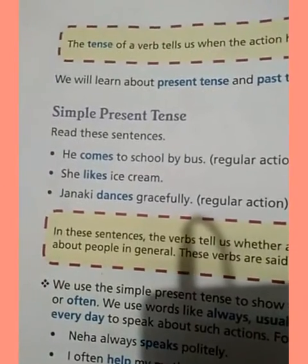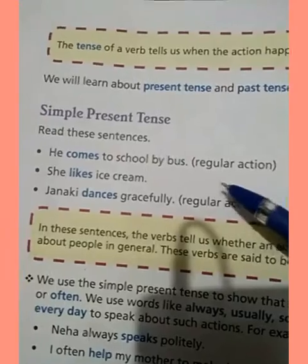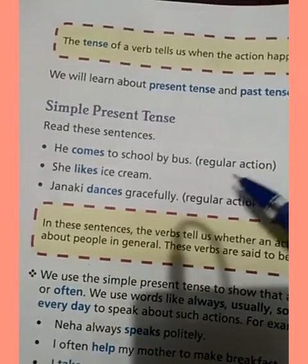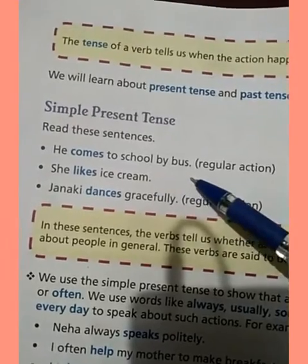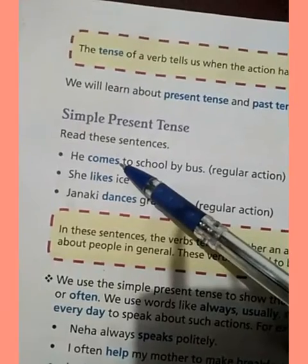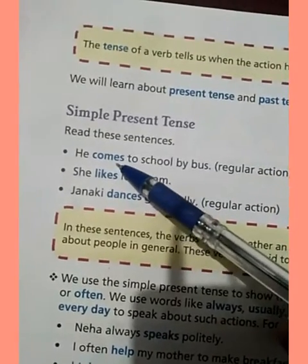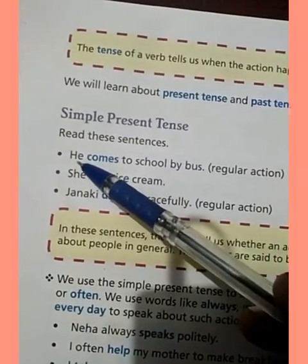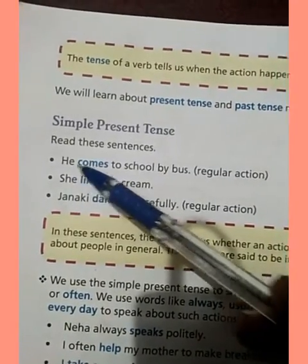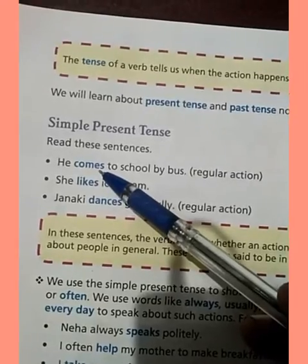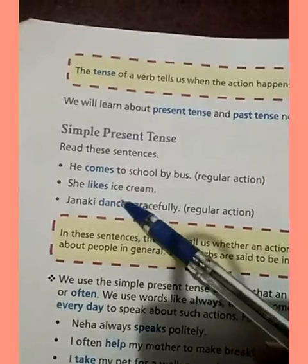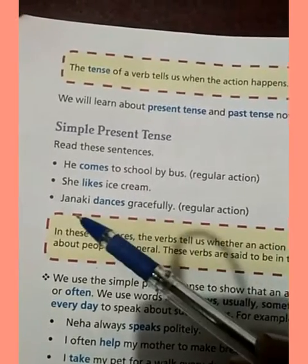For example: 'He comes to school by bus' — this is a regular action. In the simple present tense, we use the first form of the verb. If the subject is singular, we add 's' or 'es' to the verb. For example: 'He comes to school by bus,' 'She likes ice cream.'